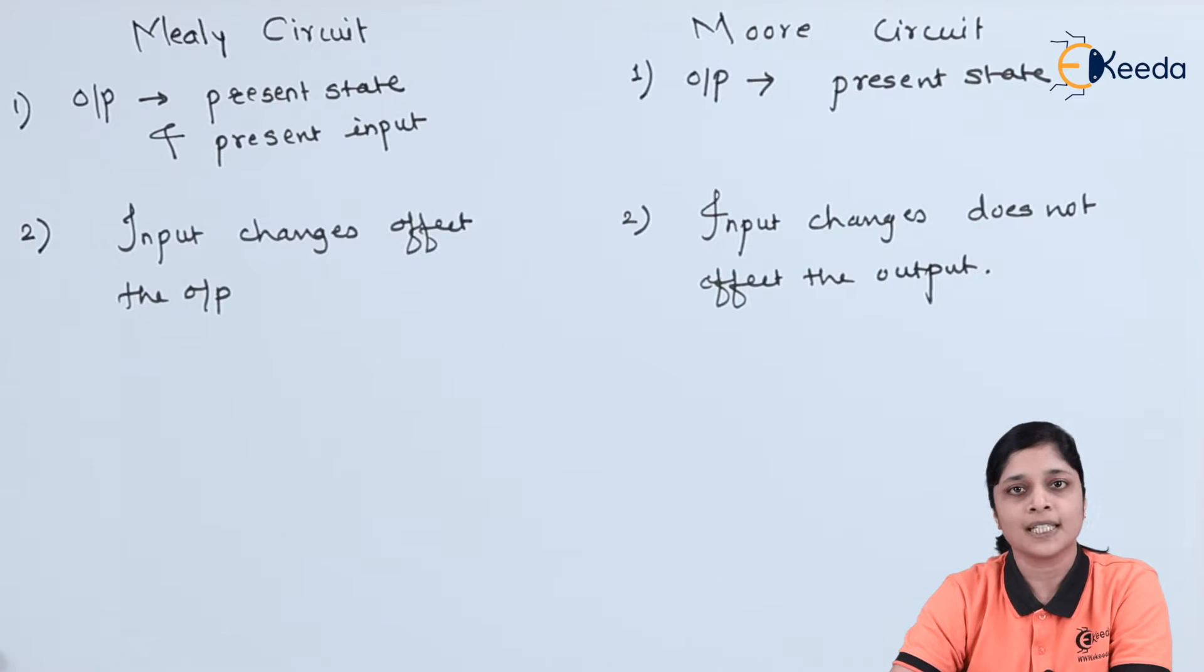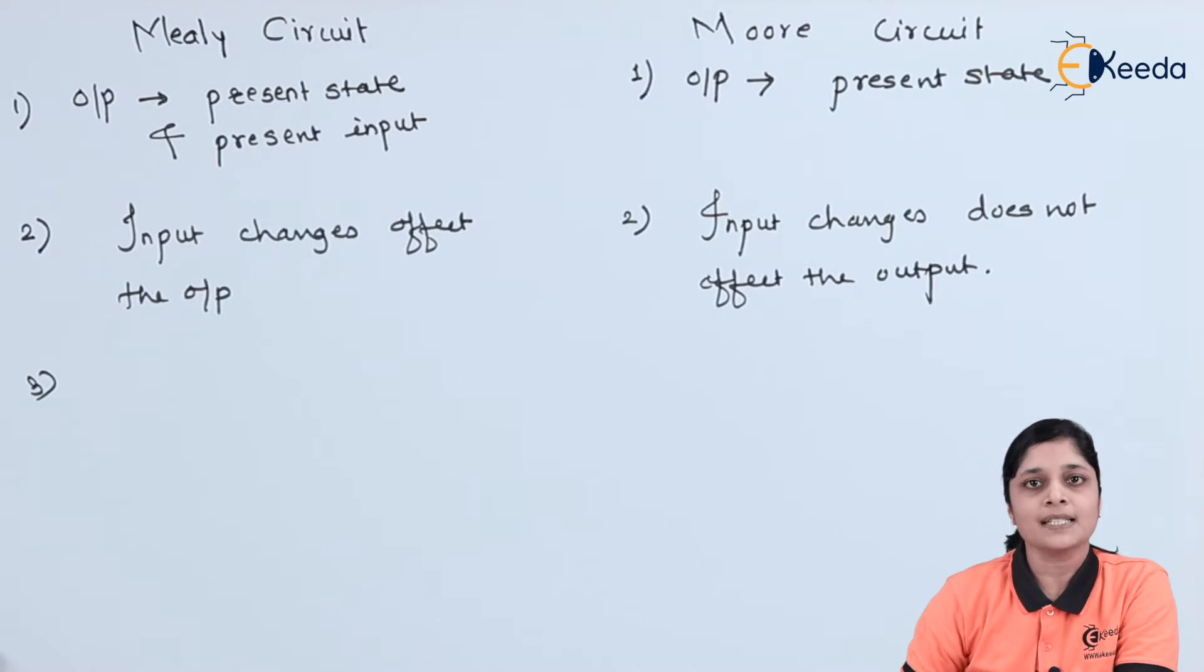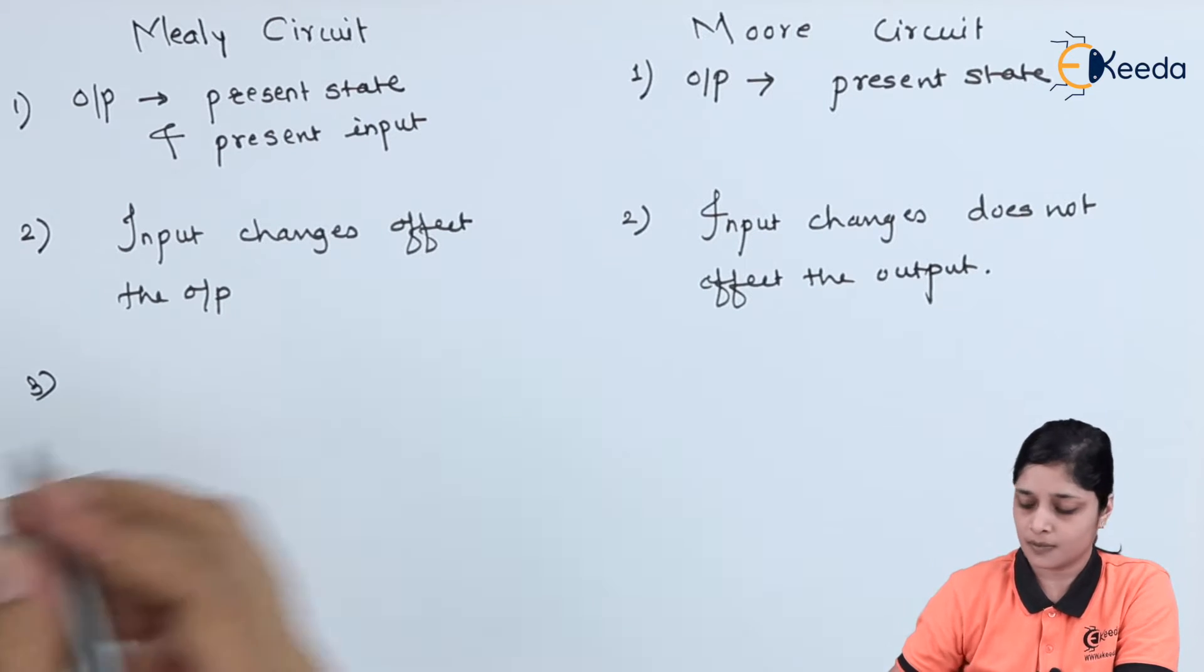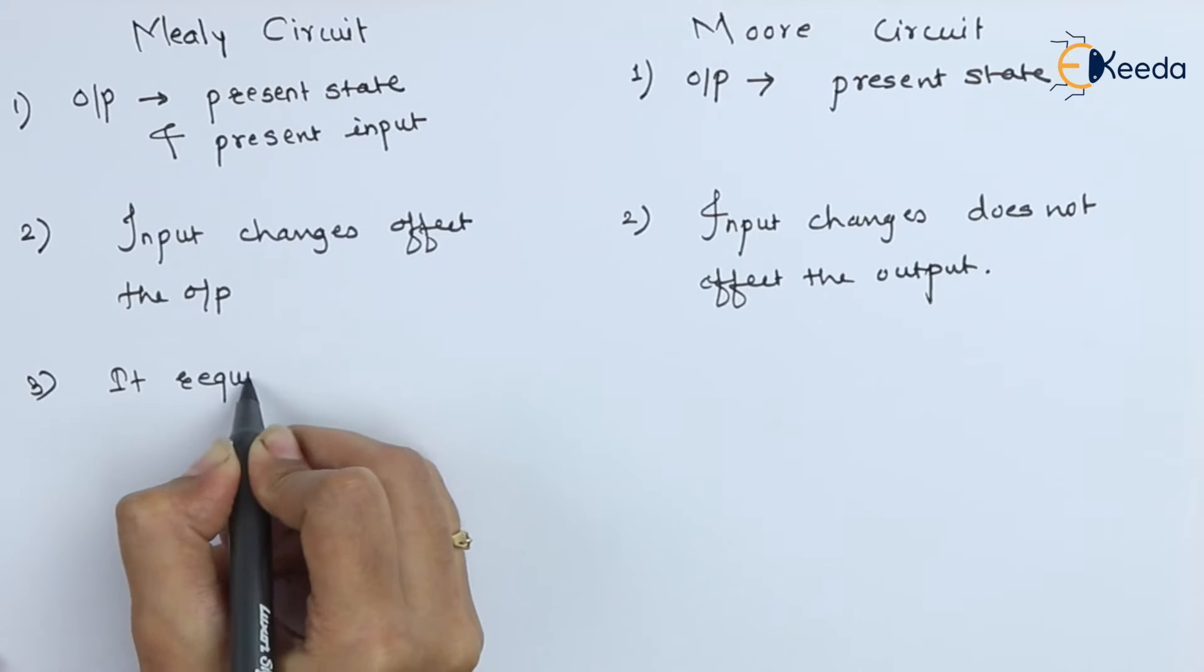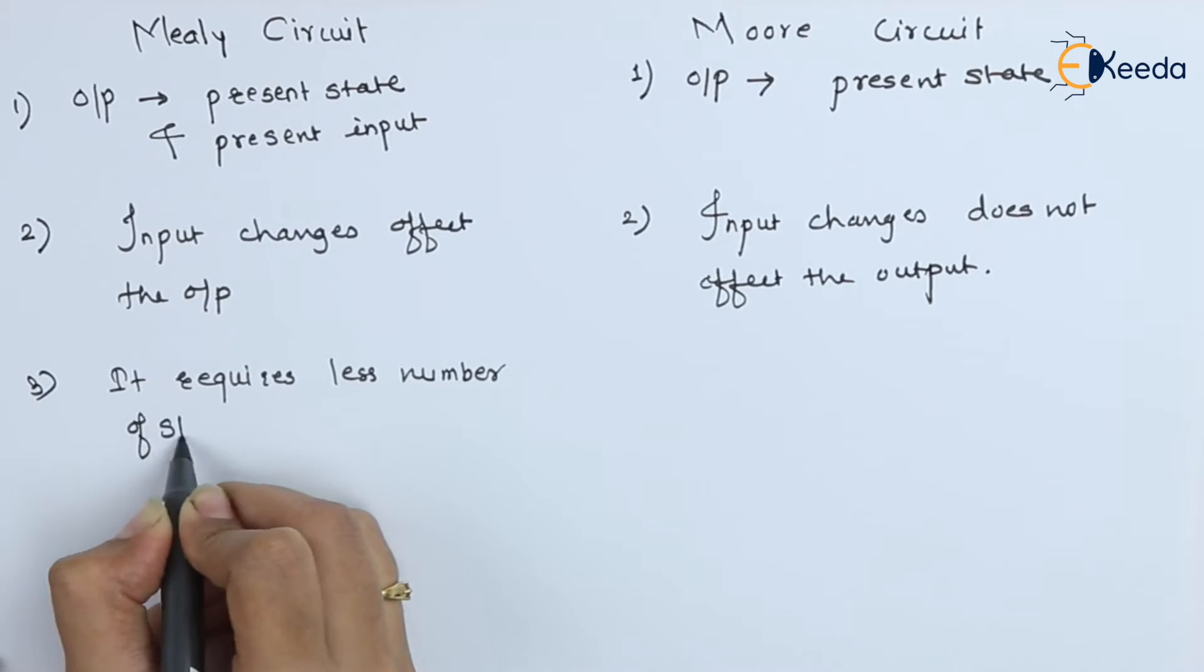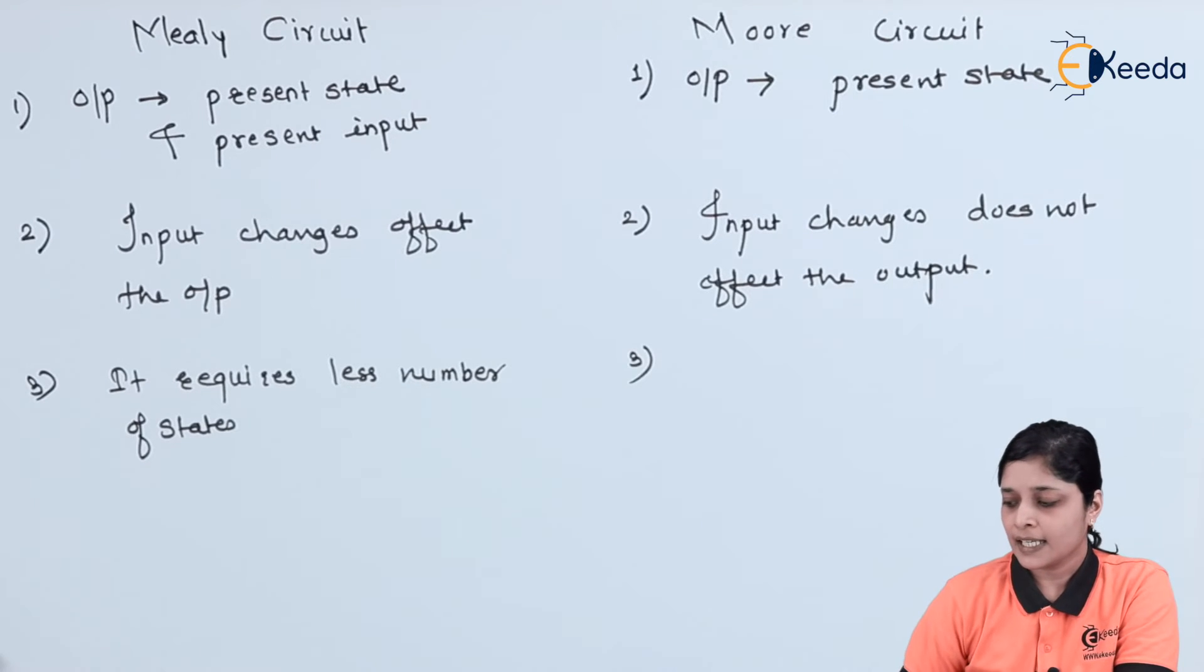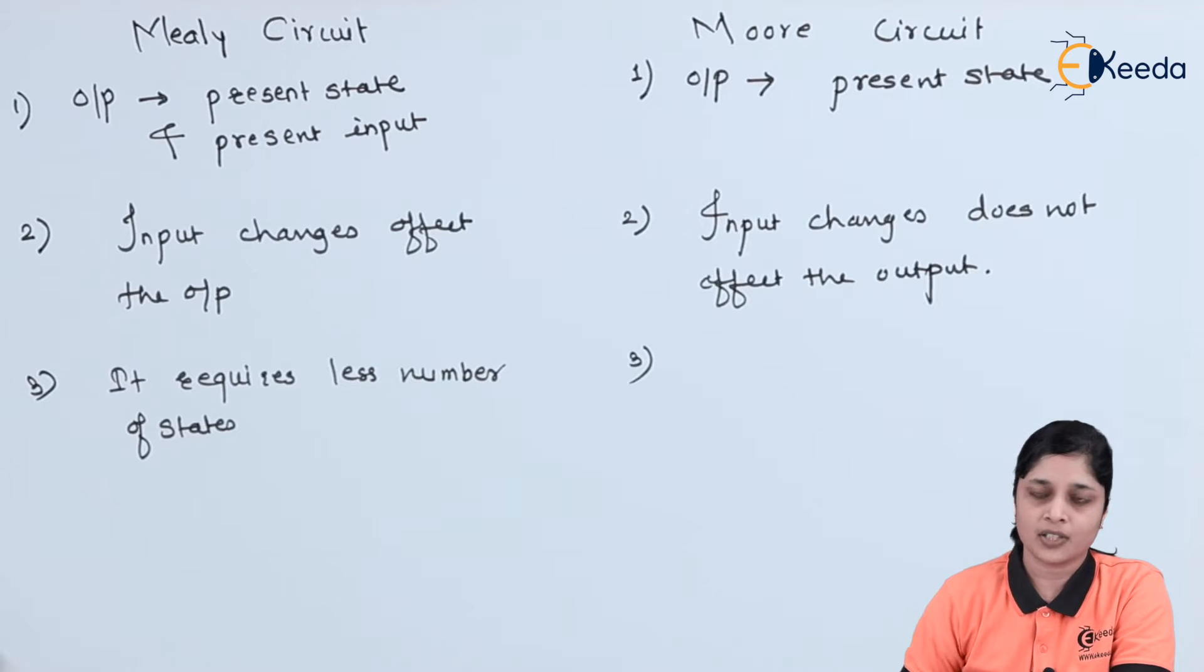Now the next point is Mealy circuit requires less number of states as compared to Moore circuits. Now in Moore circuit, this circuit requires more number of states as compared to Mealy circuit.